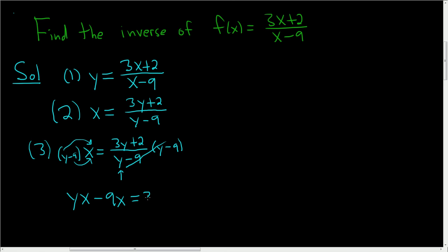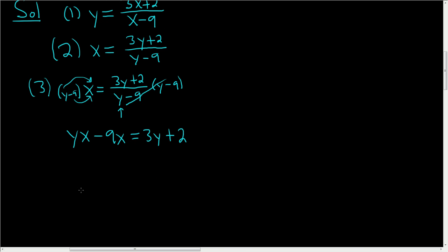On the right hand side we have 3y plus 2. We're looking for y and we have y on both sides of this equation. So the trick is to put everything with the y on one side by itself. We'll subtract the 3y.